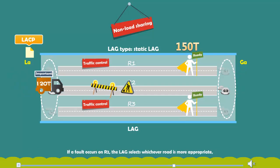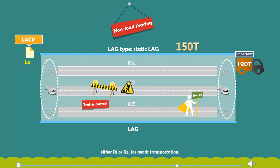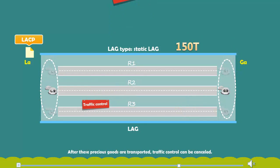If a fault occurs on R2, the LAG selects whichever road is more appropriate, either R1 or R3, for goods transportation. After these precious goods are transported, traffic control can be canceled.